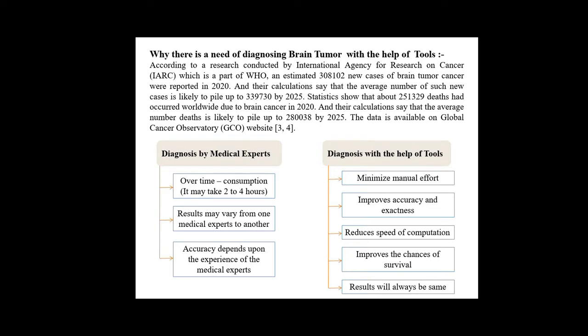According to research conducted by IARC, it is estimated that about 38,102 new cases of brain tumor were reported in the year 2020, and the mortality rate is about 251,329. Their calculations say that the average number of new cases is likely to reach 3,39,730 by the year 2025, and the mortality rate would be 2,80,038.